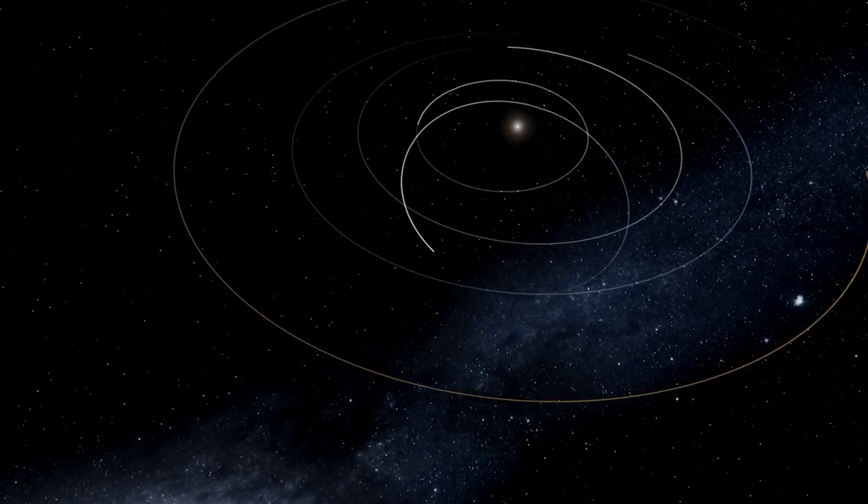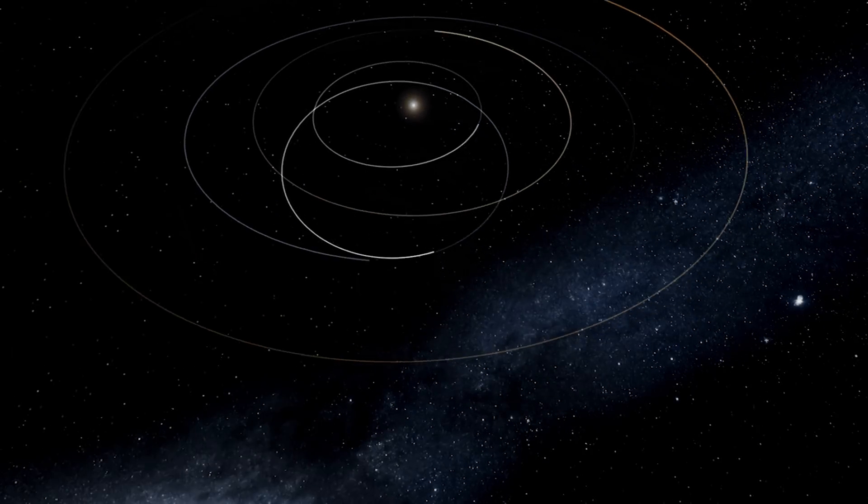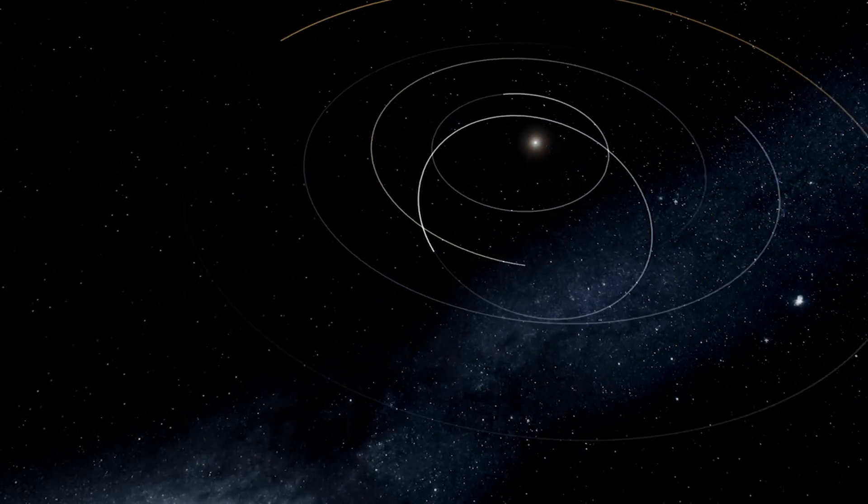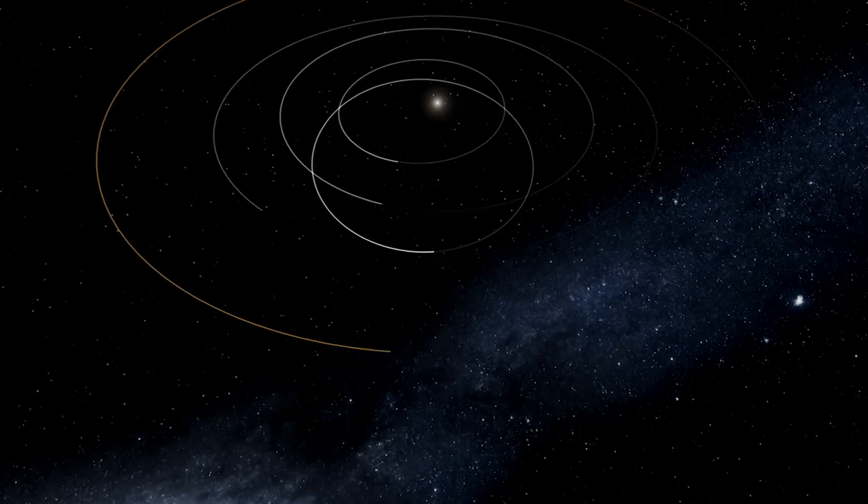During this period, the spacecraft will pass by Venus seven times, receiving gravity assists that will shrink the spacecraft's orbit, allowing it to get closer to the Sun with each pass.